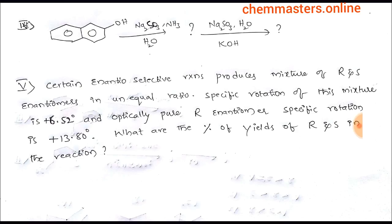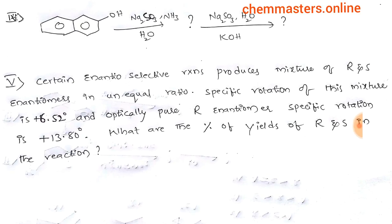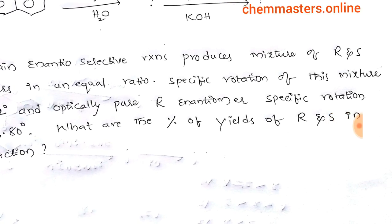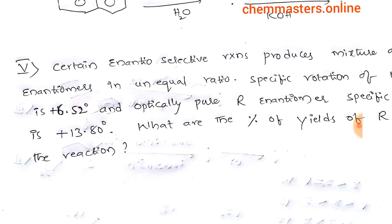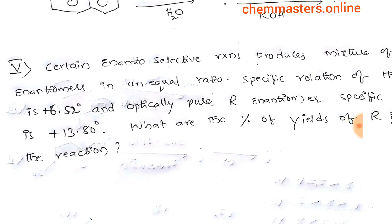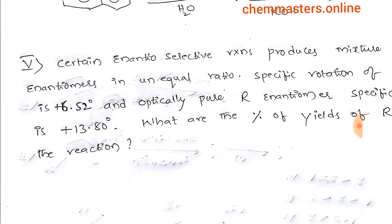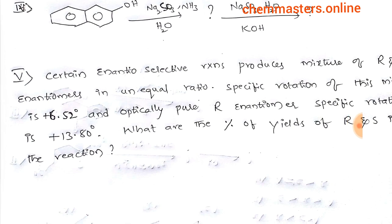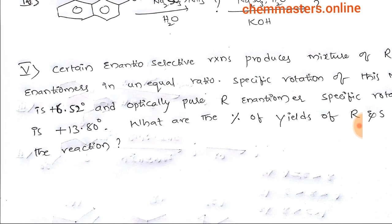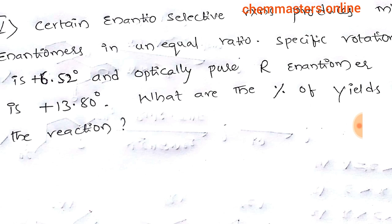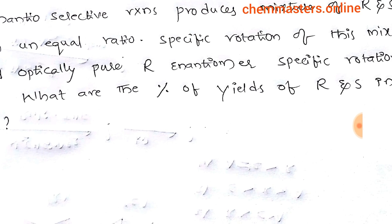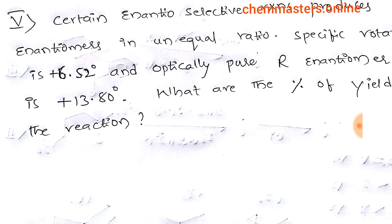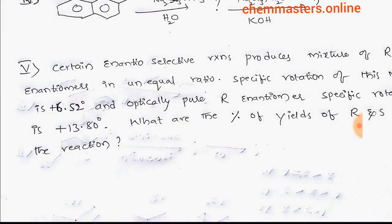Fifth question: certain enantiomer selective reactions produce a mixture of R and S enantiomers in unequal ratio. Specific rotation of this mixture is +6.52 degrees, and optically pure R enantiomer specific rotation is +13.80 degrees. What are the percentage yields of R and S in the given reaction? We need to calculate percentage yield of R and S.